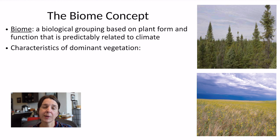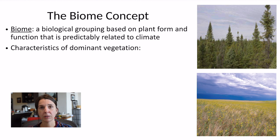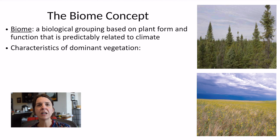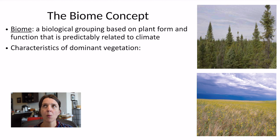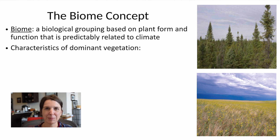What does that mean? Well, it means that if we know something about the climate in a location, then we know something about the vegetation that lives there and the characteristics of that vegetation. What sort of characteristics do vegetation and plants have?